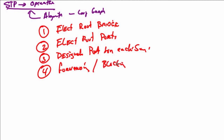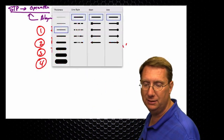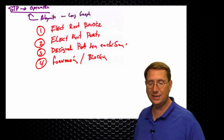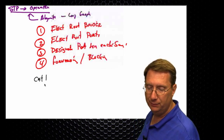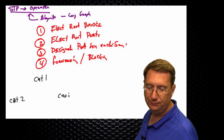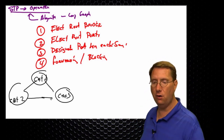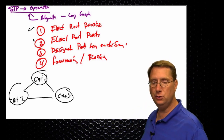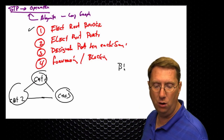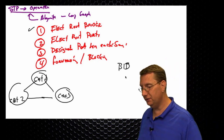Let's look at this from a graphical point of view. Say we have Cat1 connected to Cat2 connected to Cat3 — all catalyst switches configured in a loop interconnection. We're going to elect a root bridge on the basis of something called the BID, the Bridge ID. We communicate this BID inside of a frame called a BPDU — a Bridge Protocol Data Unit. Traditionally in 802.1D, the BID is broken up into two categories: first, the MAC address of the switch, and second, the bridge priority.